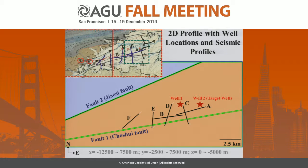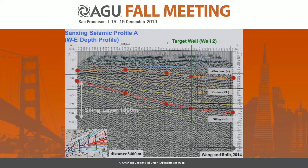These are the corresponding 2D profiles showing the locations mentioned before. We have two faults here, and these seismic profiles correspond to the geophysical data. The whole region is 20 by 10 by 5 kilometers. We have two profiles, A and B, which run along the west-to-east direction. In seismic profile A, we can see the bedding dips towards the east. We use this data to build the subsurface structures.